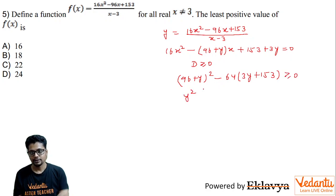So you have y square plus 192y minus 192y cancelling out. When you calculate you get minus 576 greater than or equal to 0. So you have y square is greater than or equal to 576.